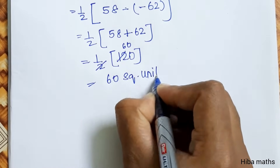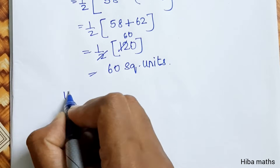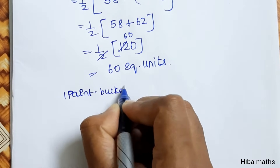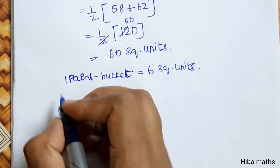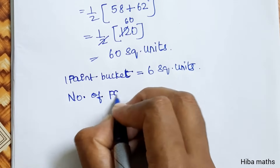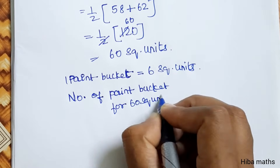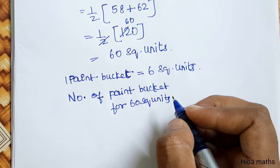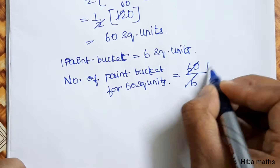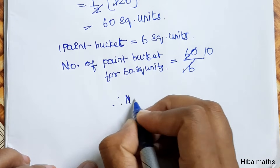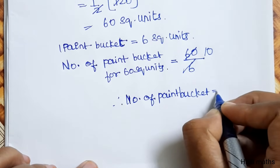So the area of the triangle is 60 square units. Now, one paint bucket covers 6 square units. The number of buckets required for 60 square units is 60 divided by 6. Since 6 times 10 equals 60, the number of paint buckets required is 10.